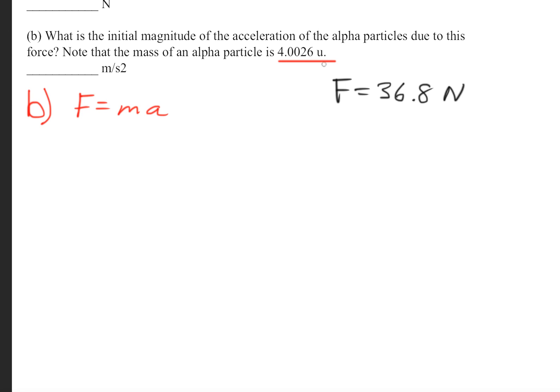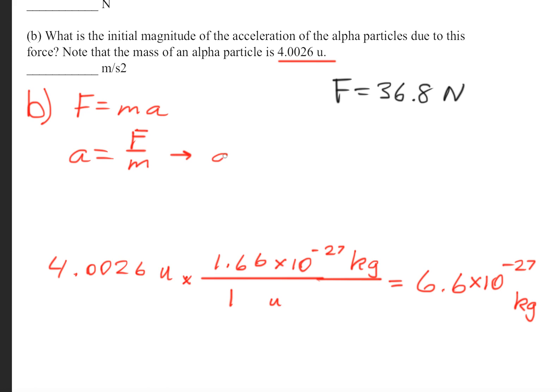Now this is not in standard units. We need to convert this to kilograms. So the conversion factor is this right here. So now what we're going to do is solve for a. We divide by m, and then we get the acceleration is equal to 36.8 divided by 6.6 times 10 to the minus 27 kilograms.